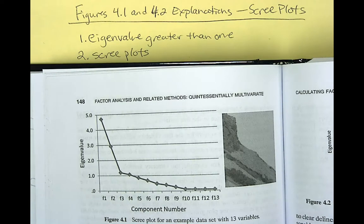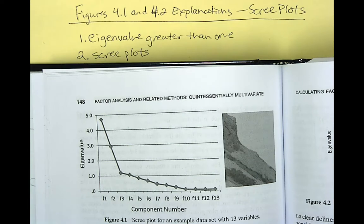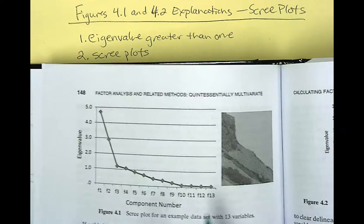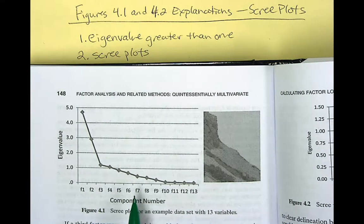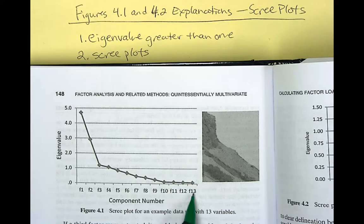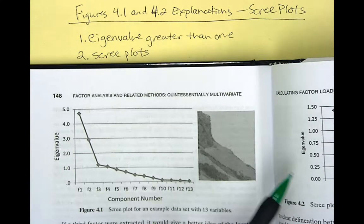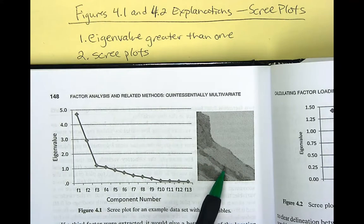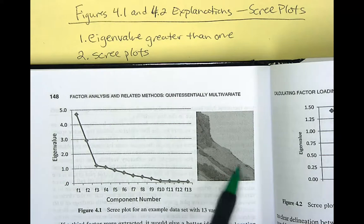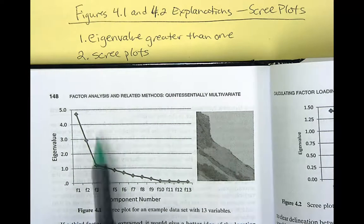In factor analysis, a scree plot is simply a plot of eigenvalues from successively extracted factors. So you can see that figure 4.1 shows a scree plot from a factor analysis of 13 variables. And you can see here what I was talking about before, the accumulation of broken rock material that's found at the base of mountain cliffs. These kind of look similar here.